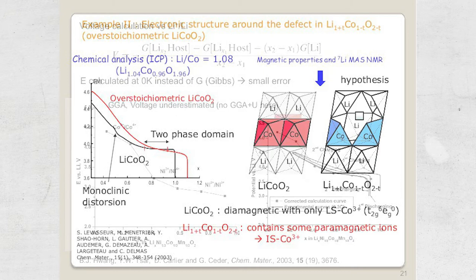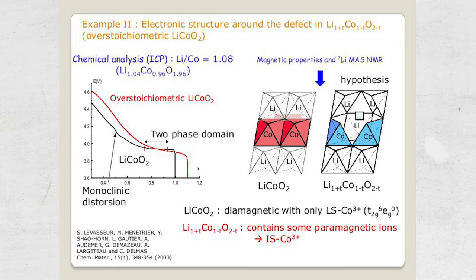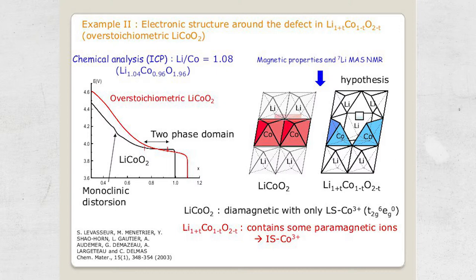The second example deals with the electronic structure of defects in over-stoichiometric LiCoO2 — the stable O3-type stacking form. It can be synthesized with an excess of lithium. The cycling curves differ from stoichiometric LiCoO2, which shows a two-phase domain and lithium vacancy ordering at x=0.5. For the over-stoichiometric phase the curve is much smoother. From previous work based on magnetic properties and solid-state lithium NMR, we built a hypothesis for the defect structure to explain the excess lithium.